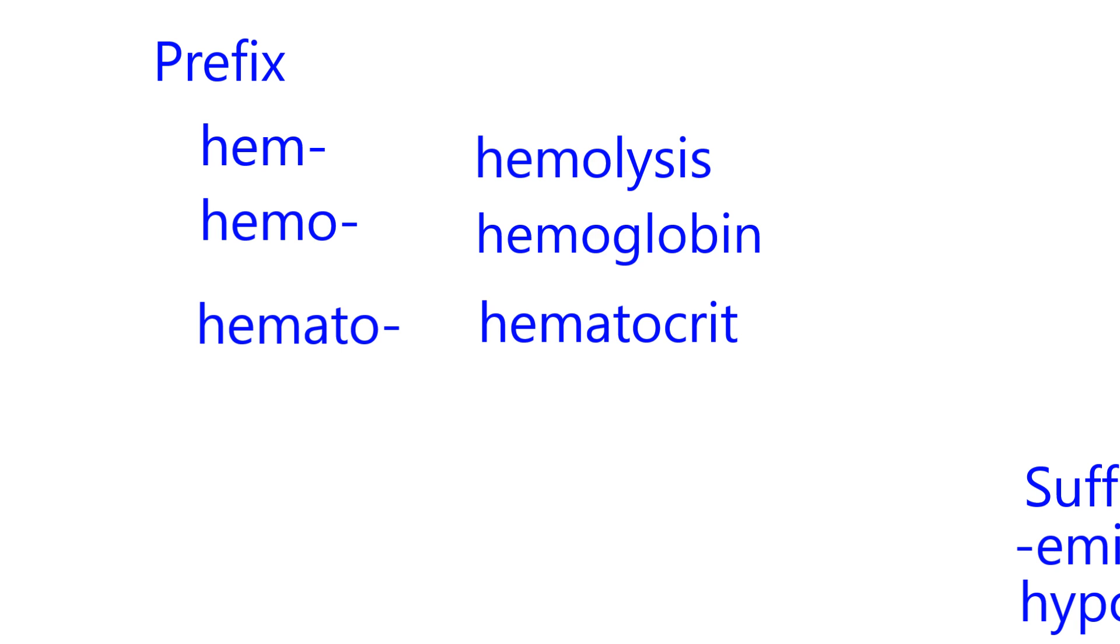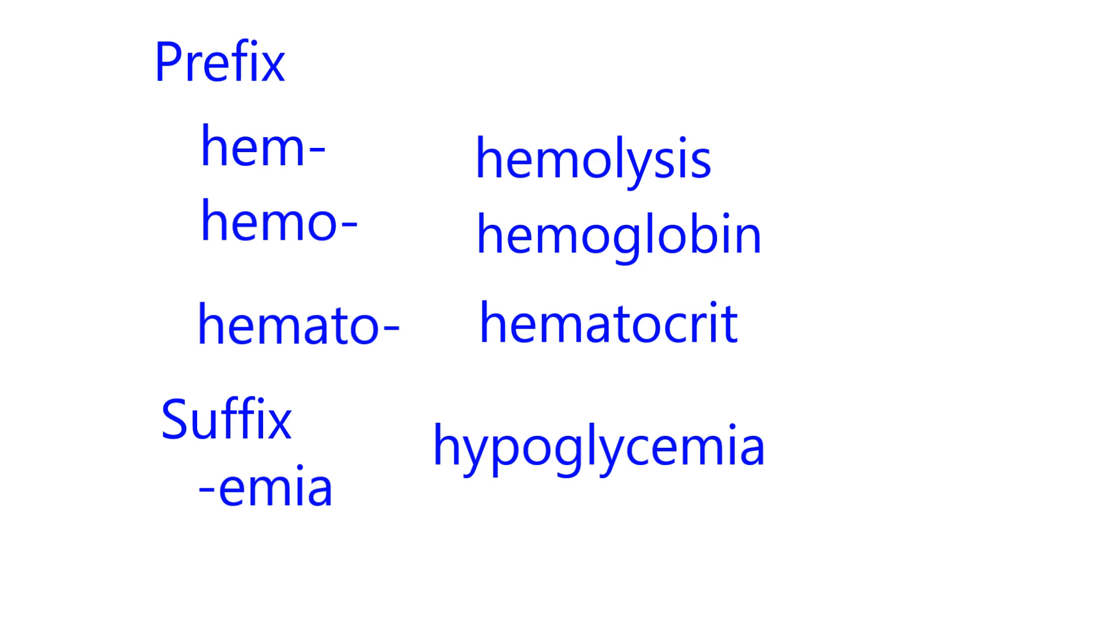Then, for a suffix, that's something that goes to the end of the word, one very common suffix is emia, E-M-I-A. And so for my example word for emia, I have hypoglycemia. There's my emia at the end, so when you have to digest this word, you see blood. And then hypo is a prefix meaning low. And this gly refers to blood sugar or glucose. So this term, hypoglycemia, literally means low amount of glucose in the blood.